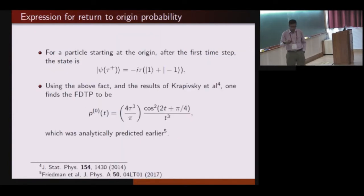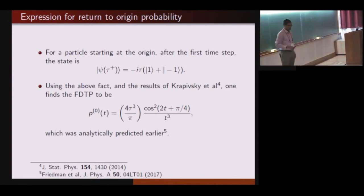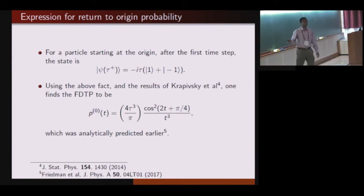We can also find an expression using some results that had been derived in an earlier reference. We have also found an exact expression for the return to origin probability. So the particle starts from the origin, and what is the first time that it gets back to origin? This was not possible in the earlier Hamiltonian because the origin was not part of it. But in this model, the origin is part of the Hamiltonian, so we can get the return to origin probability.